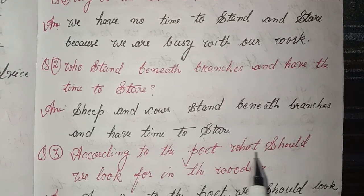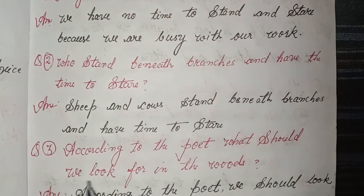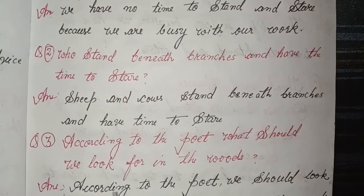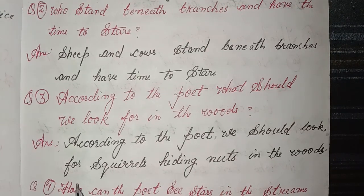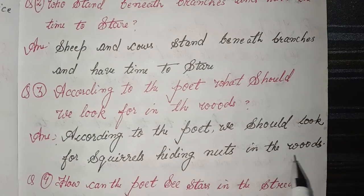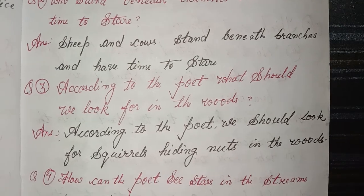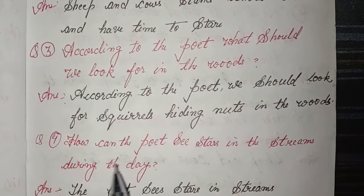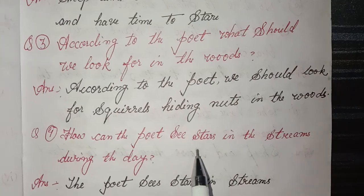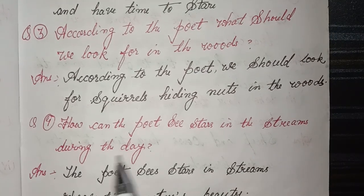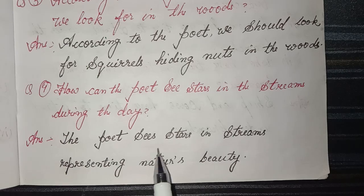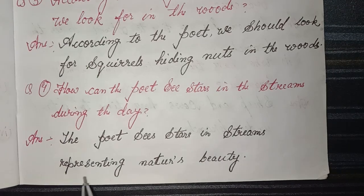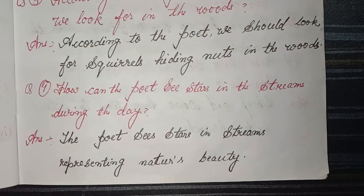Third: according to the poet, what should we look for in the woods? Answer: according to the poet, we should look for squirrels hiding nuts in the woods. Four: how can the poet see stars in the streams during the day? Answer: the poet sees stars in streams, representing nature's beauty.